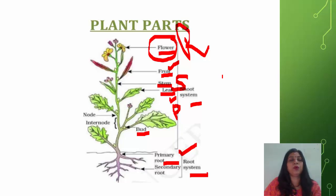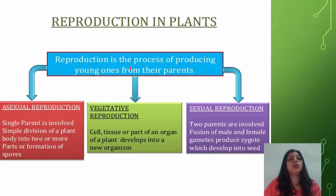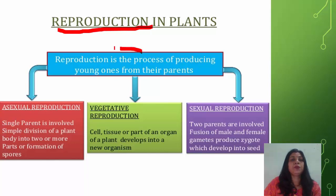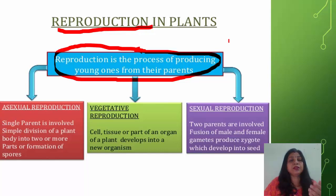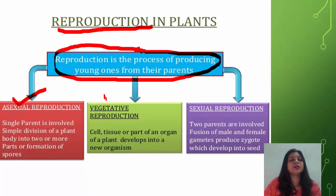Coming to the term reproduction: reproduction is the process of producing young ones from their parents, and these young ones are of the same kind — they resemble their parents. Reproduction in plants is of three types: asexual reproduction, vegetative reproduction, and sexual reproduction.